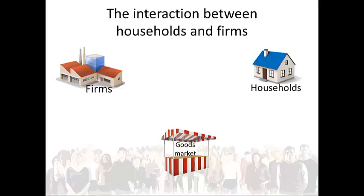The goods market is a platform that allows firms and households — meaning the sellers and the buyers — to interact. The sellers can display their product and the buyer can choose what they like. Therefore, firms create the supply of goods and services in the goods market, while households create demand for goods and services.